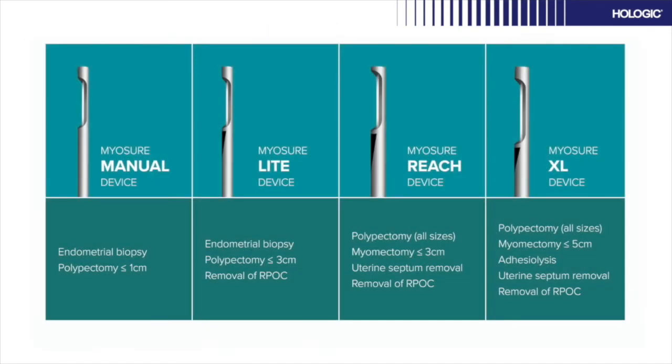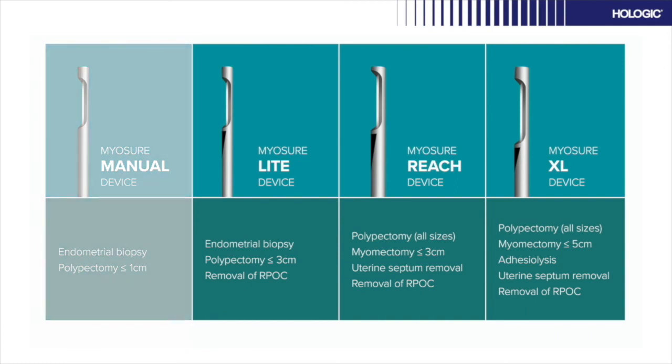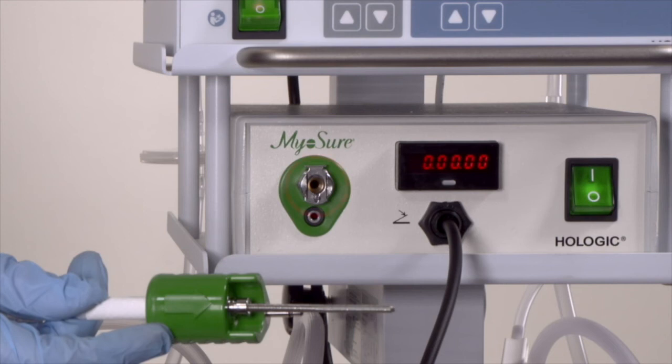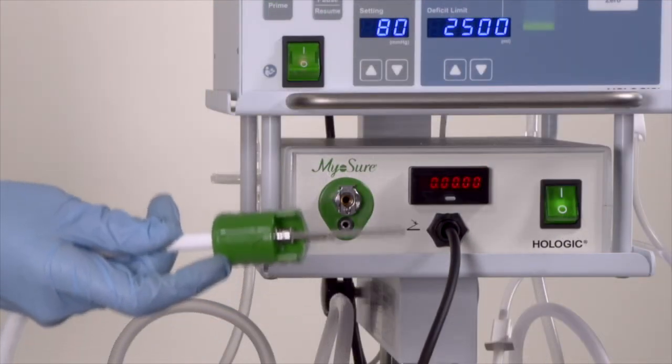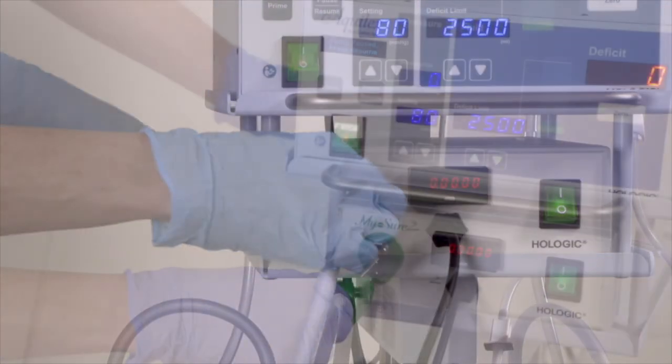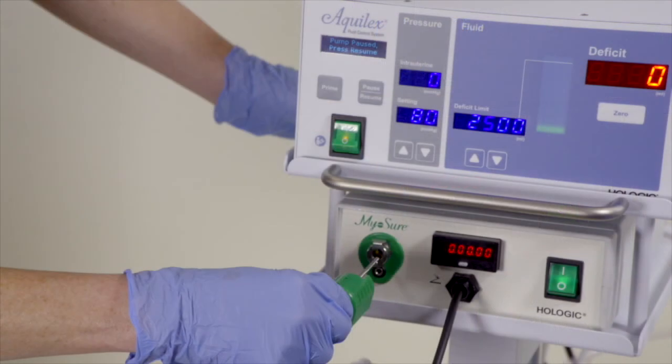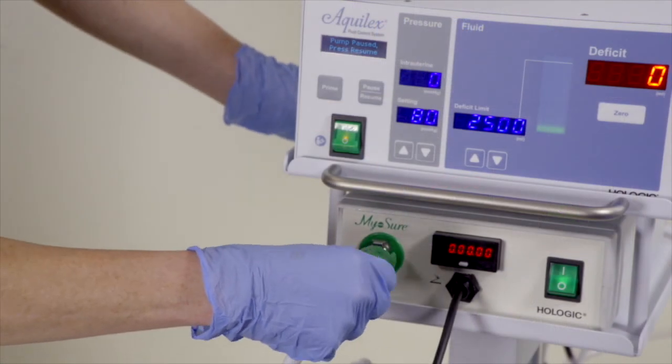If intrauterine pathology has been identified and needs to be removed, ask the clinician which Myersure device they require. Note the Myersure manual device does not require use with the Aqualex fluid management system or Myersure controller. Connect the large green end of the white drive cable into the Myersure controller located below the Aqualex pump. Insert the arrow facing up with the small pin at the bottom and the large pin at the top. You will hear a click once connected.